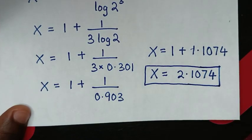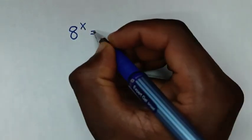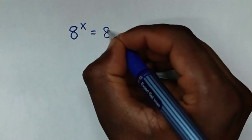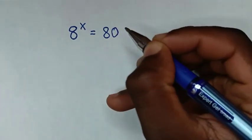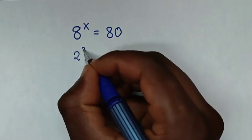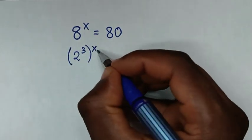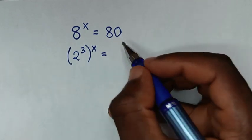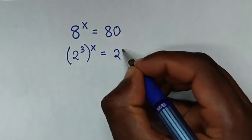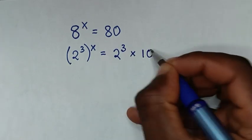Or, to solve using another method: from our problem, which is 8 to the power of x is equal to 80 — in the first step, this 8 is the same as 2 to the power of 3, then bracket, to the power of x is equal to 80, and 80 is the same as 2 to the power of 3, which is 8, times 10.